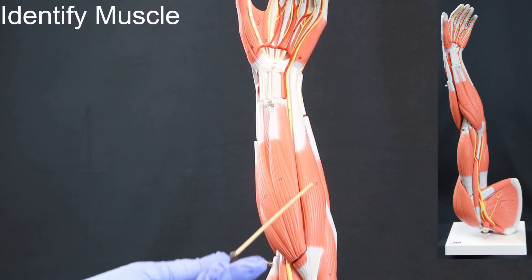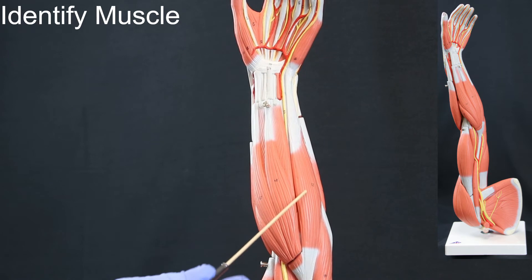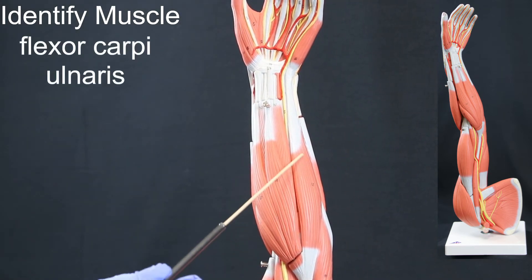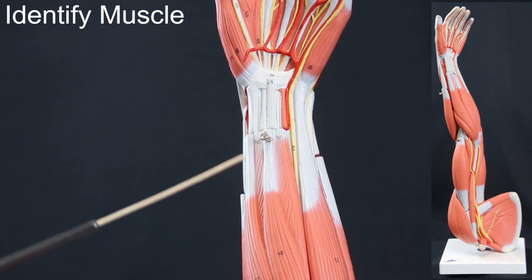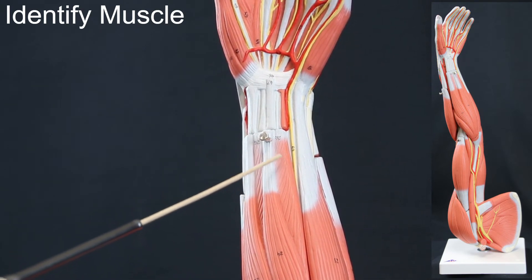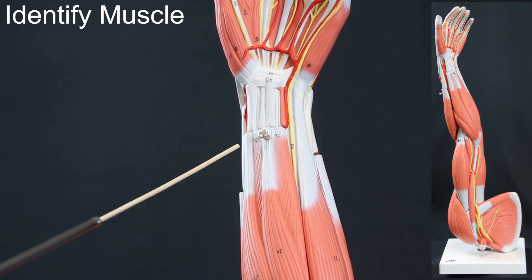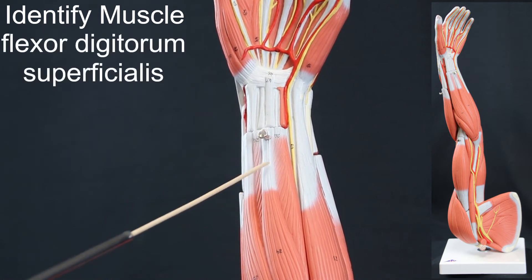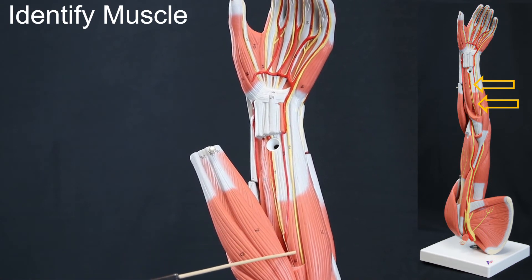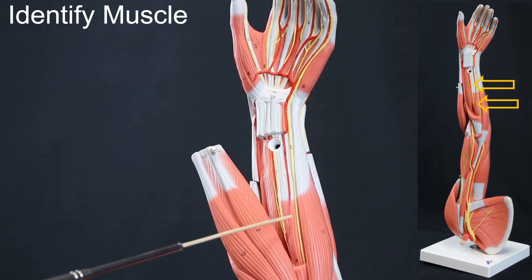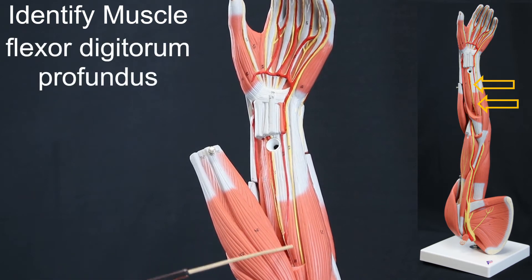I.D. muscle: flexor carpi ulnaris. I.D. muscle: flexor digitorum superficialis. I.D. muscle: flexor digitorum profundus.